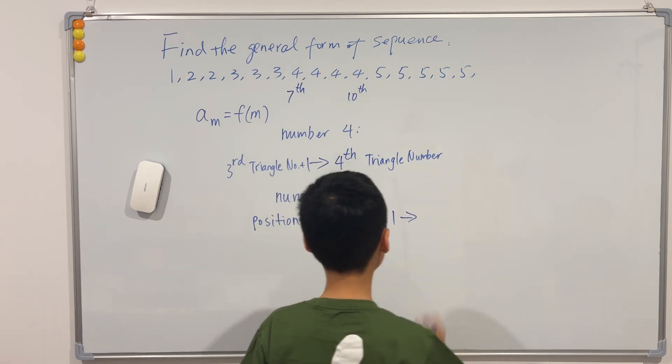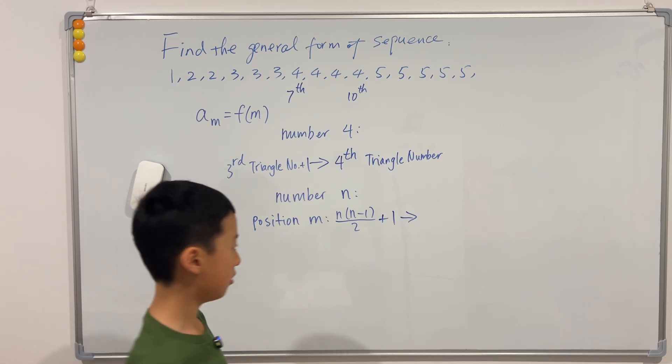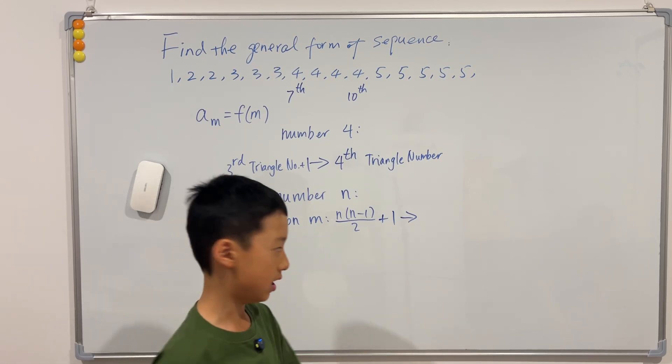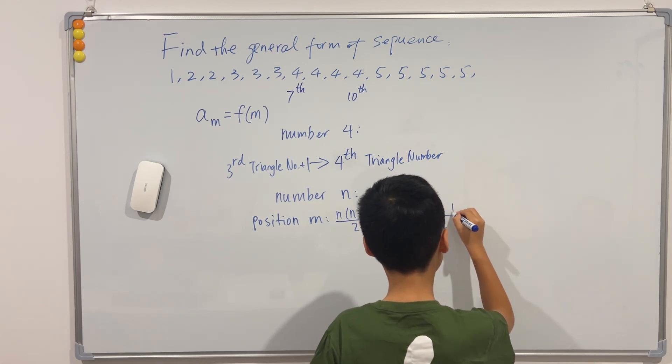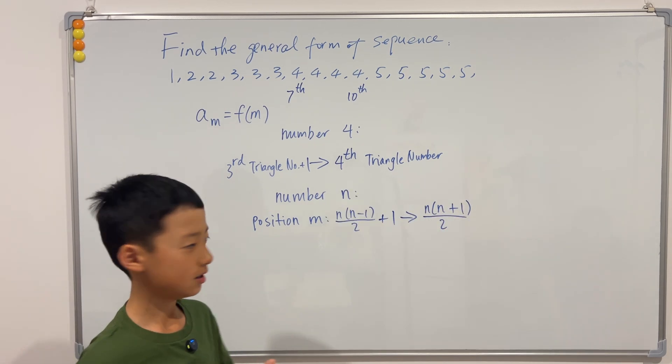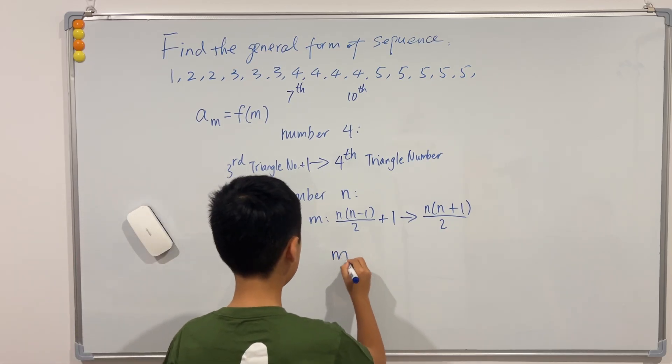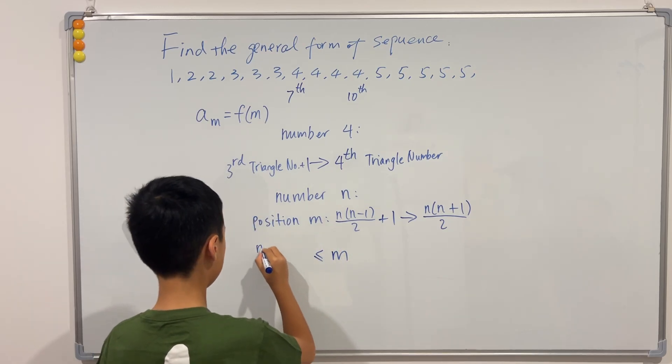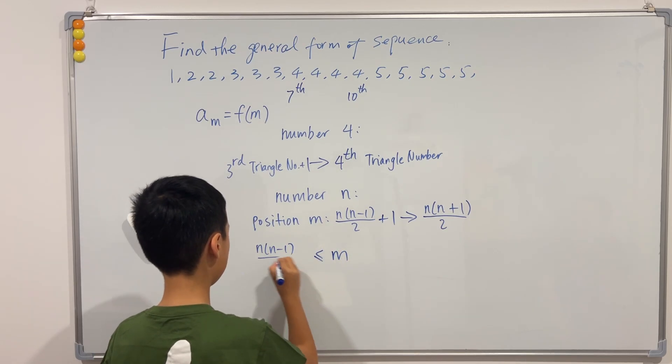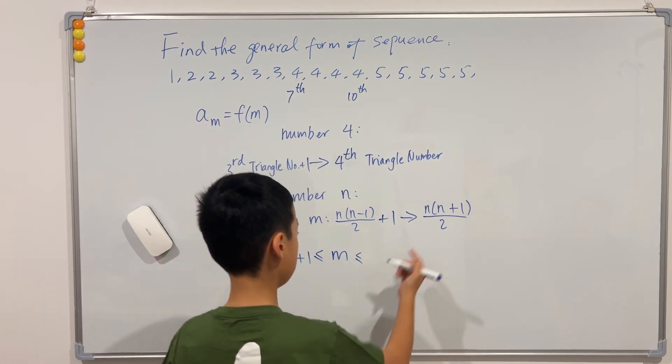And this goes to the nth triangular number, which is pretty simple. We just add the numbers from one to n. So from here we can see that n has to be greater than or equal to this plus one and less than or equal to this.